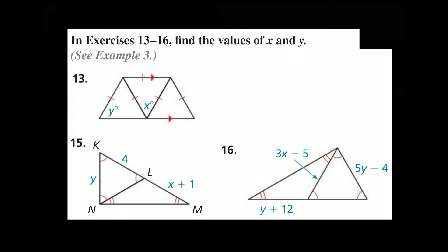In exercises 13 through 16, find the values of x and y. Let's start with number 13. It gives us some congruent sides — this side, this side, this one up here, this one, and this one — all of those sides are congruent. So this middle upside-down triangle has all sides the exact same, which means all angles are the exact same, making it an equilateral triangle. And all angles in an equilateral triangle are always 60 degrees.